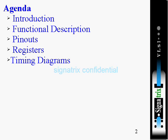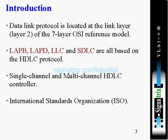Coming to the introduction: the data link layer protocol is located at Layer 2 of the 7-layer OSI reference model. Protocols such as LAPB, LAPD, and LLC (Logical Link Controller) are all protocols pertaining to the data link layer.